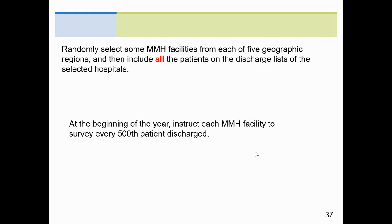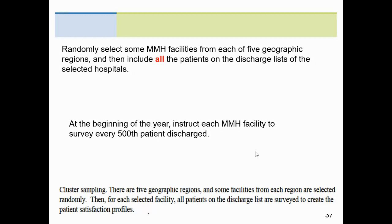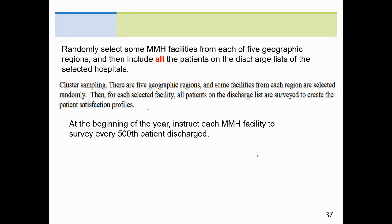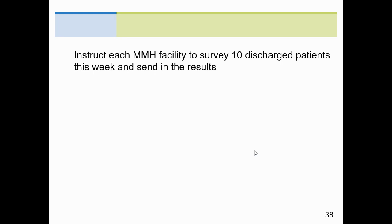Randomly selected a facility from each of the five geographic regions, and then include all the bases. I kind of gave it away by putting the word all in. We're molding it out, clusters, sampling, all. Every, at the beginning of the year, instruct each facility to survey every 500. That's systematic. 500, that's 1,000, that's 1,500. Every 500, that's the system, systematic. Instruct each facility to survey 10 discharge patients. This is, you know, pretty much convenience, right? How hard is that to do it? Well, hopefully that helps.